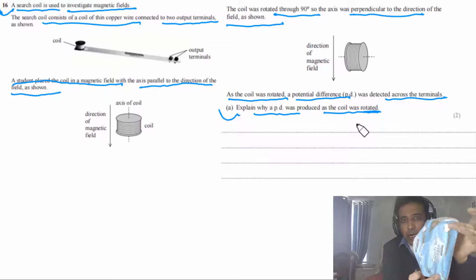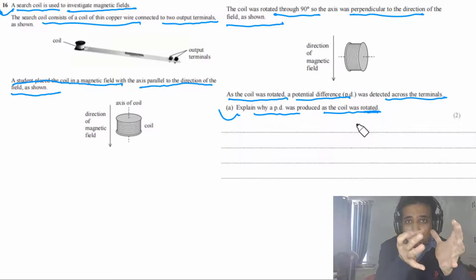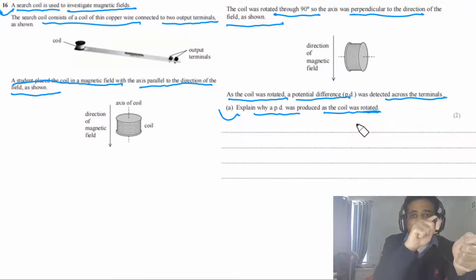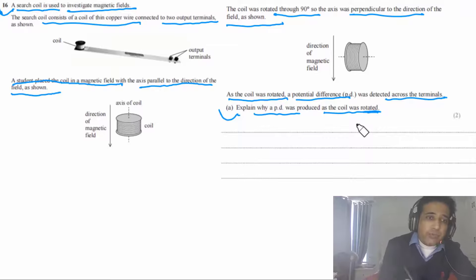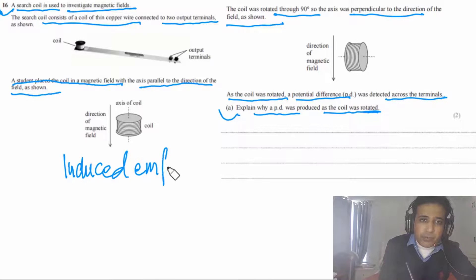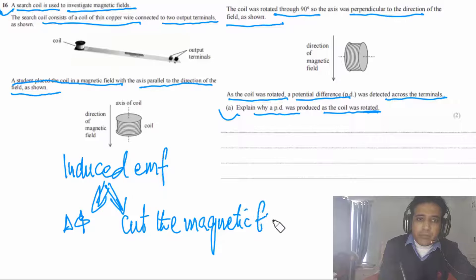The coil is a conductor inside an external magnetic field. When rotated, the wires cut the magnetic field lines — there is a change in magnetic flux through the coil. According to Faraday's law, a change in flux induces an EMF. That is why a PD is detected.